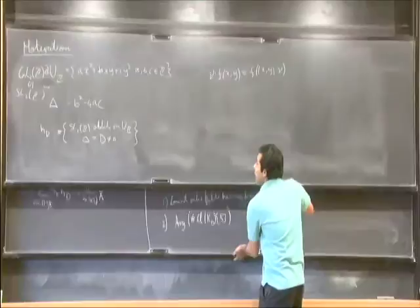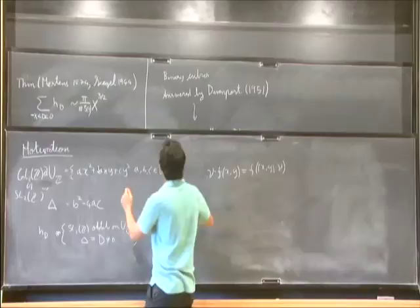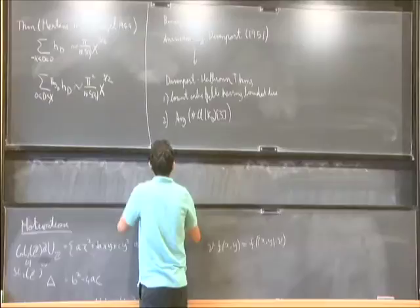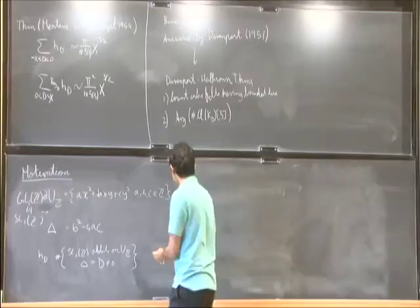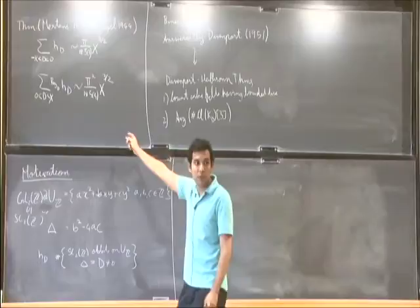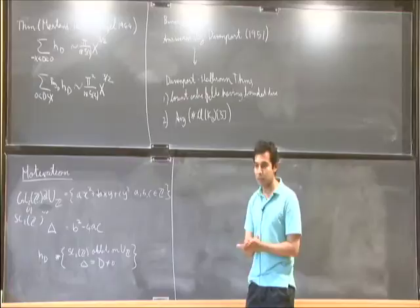Now we look at binary quartic forms. Binary cubic forms was like binary quadratic forms in that the action of GL(2,Z) in the space of binary cubic forms, the ring of invariants is generated by just one element, again the discriminant. In the case of binary quartic forms this is no longer the case.